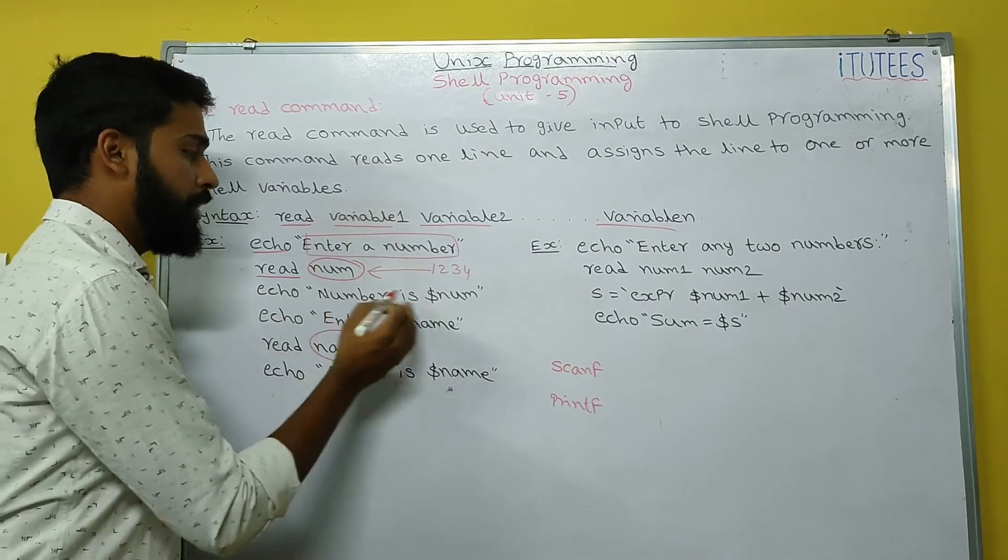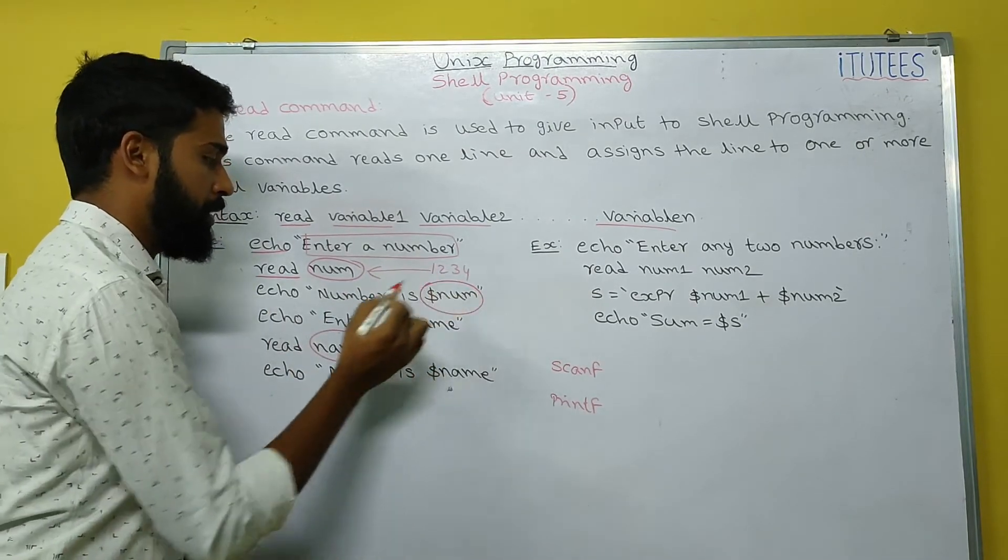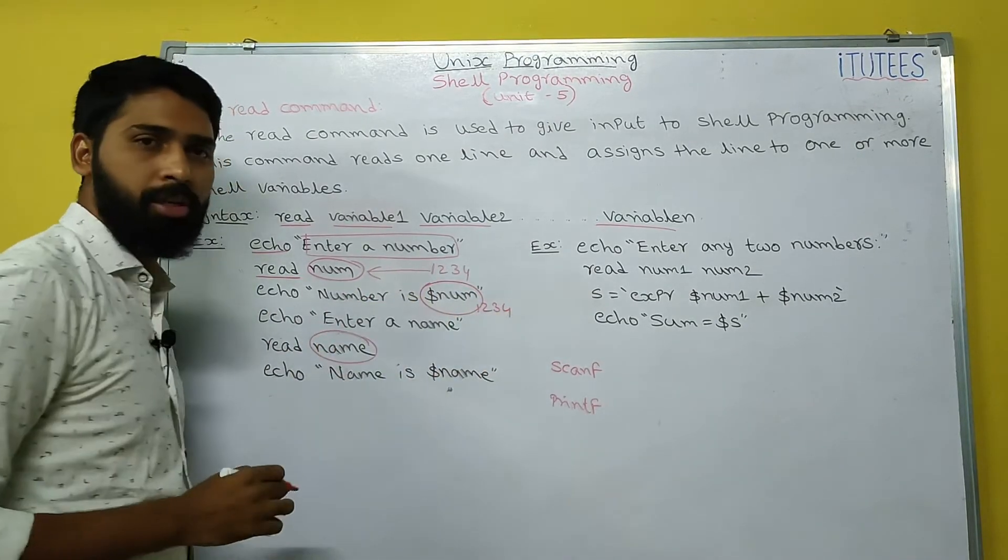After that, echo number is - so now we are going to print the number. So, number is 1234. That is the output.